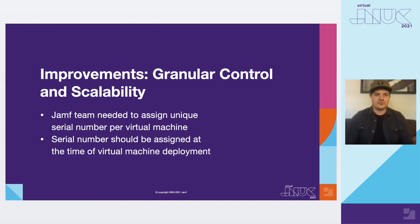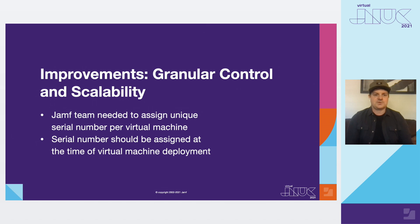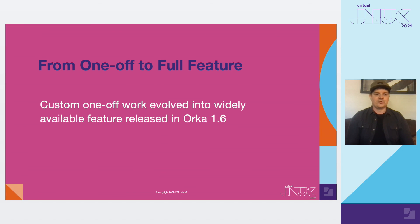There was a little bit of room for improvement here. The Jamf team actually needed to assign a unique serial number to each virtual machine, and they needed to be able to assign that at the time of deployment. So on the Orca team, we took this request and developed it into a full-blown feature, which we released in Orca 1.6, which is now widely available to all Orca customers.